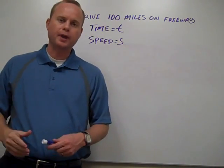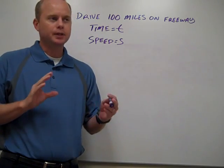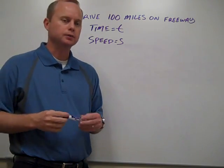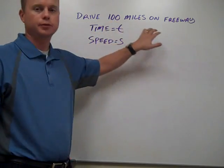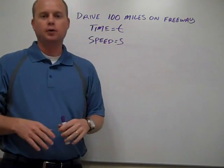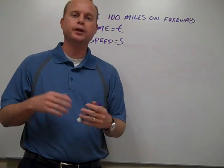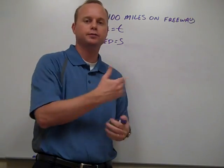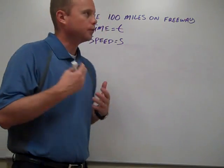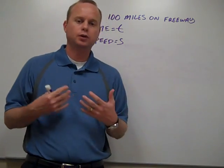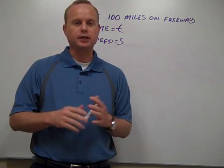We're going to talk about practical domain and range at this point. This one can be a little bit confusing, so I'm trying to clarify it a little if we can. Let's pretend that you're going to drive 100 miles on a freeway — you're going on a trip, going out of town, and you're going to take the freeway. We want to calculate how long it's going to take us to drive those 100 miles at varying speeds.